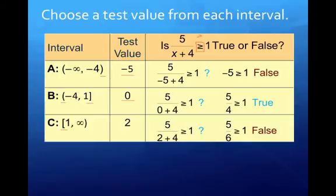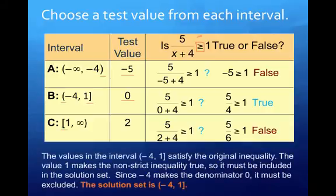So only the middle interval is true here. And so our answer is going to be parentheses on the negative 4 to 1 bracket. And I give you a little bit more of an explanation down here, so you have it in your notes as to why parentheses versus brackets.